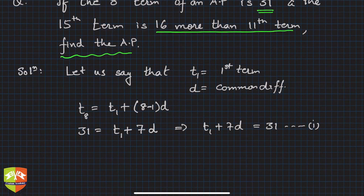Now let's find out another relationship. We have two variables, t₁ and d, to be found out. So if we get one more equation, our job is done. Now it says 15th term is 16 more than the 11th term. So t₁₅ is 16 more than the 11th term.